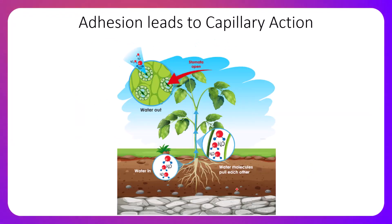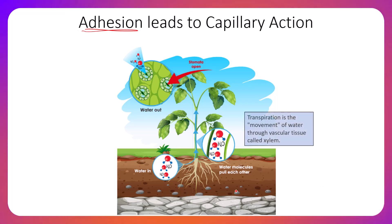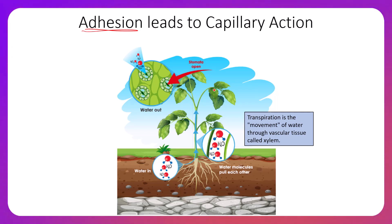Adhesion, like cohesion, is the ability to form hydrogen bonds — but instead of forming bonds between water and water, adhesion involves forming hydrogen bonds between water and non-water surfaces, which leads to capillary action. Transpiration is the movement of water through the vascular tissue called xylem.